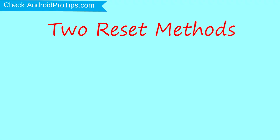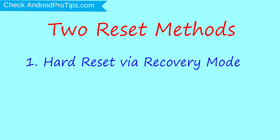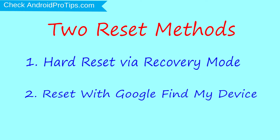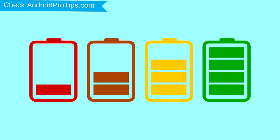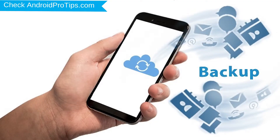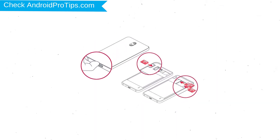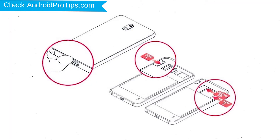We provide two reset methods. First method: hard reset via recovery mode. Second method: reset with Google Find My Device. Before resetting your mobile, charge your mobile if the battery is less than 50%. Make sure that the data on your device is backed up so you do not lose valuable photos or documents. Reset deletes all your mobile data, so back up all important data and remove SIMs and SD card.